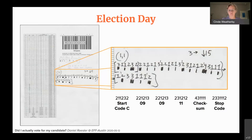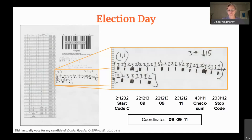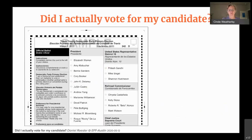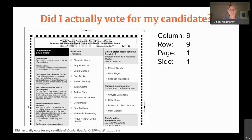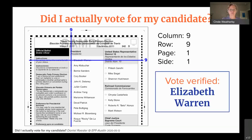So I copied that down before scanning my ballot, and now I had to figure out who that selection actually was on the absentee ballot. You can just go to the Travis County website and download your sample ballot before the election. The coordinates were: column 9, row 9, page 1, side 1. Column 9 was the selection row for all the bubbles, and row 9 was Elizabeth Warren. I manually verified I voted for Elizabeth Warren from the scanned barcodes!